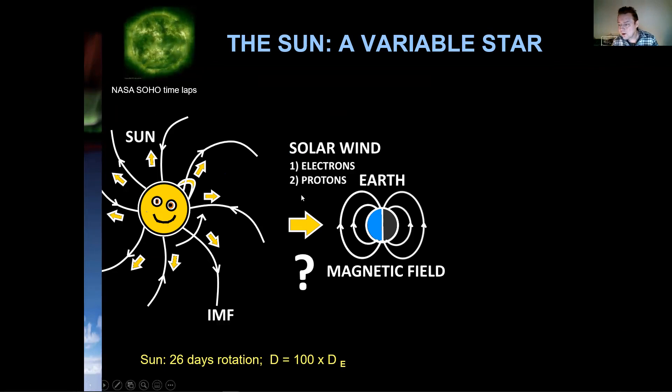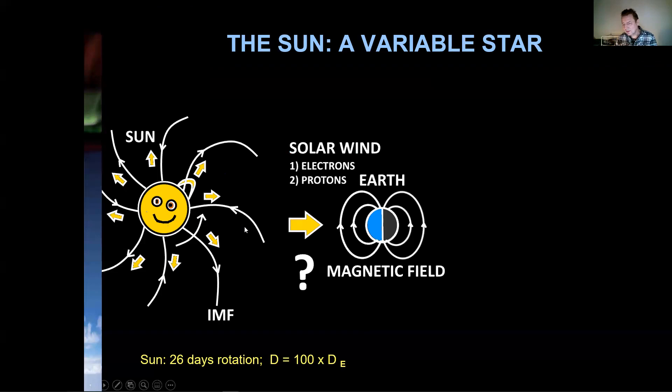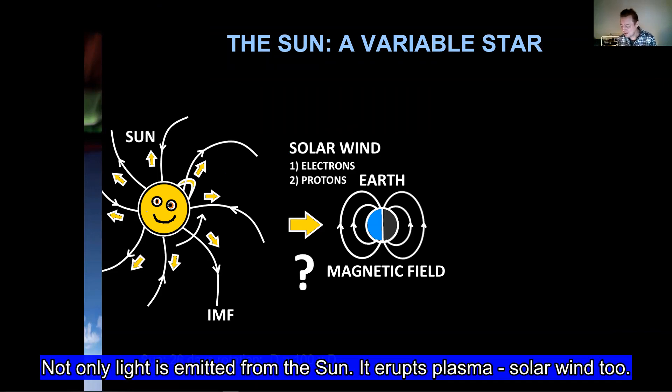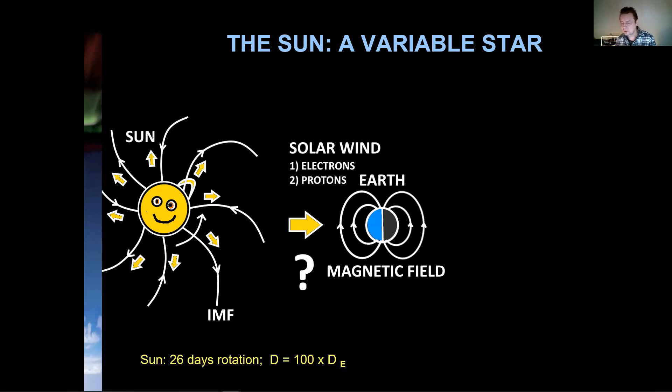Below here is an animation I made myself. It shows the sun and notice here that the magnetic field of the sun is carried along with the eruptions of the sun. It's kind of frozen in with the mass that is erupted. And this mass is a gas of equal amount of electrons and protons.